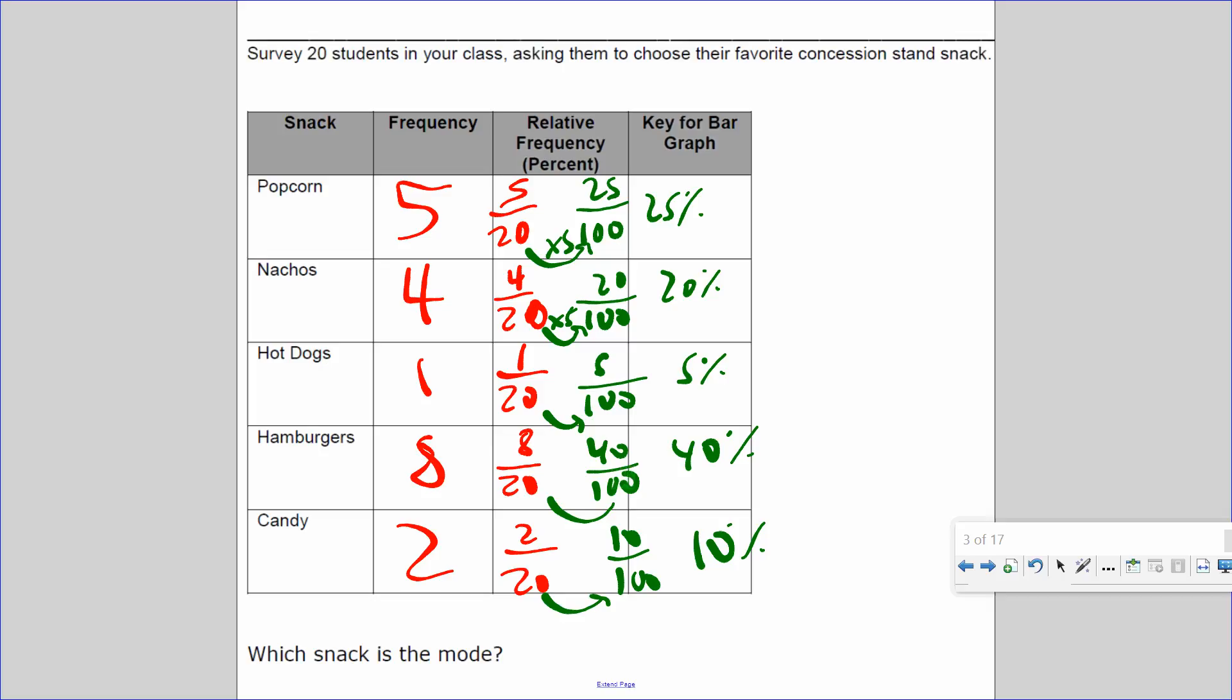And times five, 10%. Which snack is the mode? What was the most requested value? The most popular value, according to this, is hamburgers. When people go to a concession stand, a lot of people want to buy hamburgers.